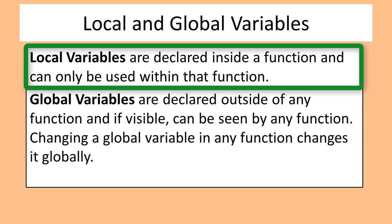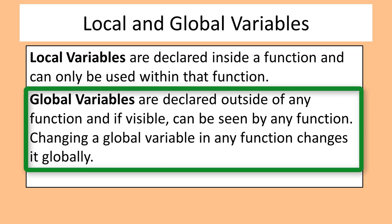The memory locations for local variables are not initialized to any specific value, but contain whatever was left in them the last time those locations were used by some other part of the program. Global variables are declared outside of any function and, if visible, can be seen by any function. Changing a global variable in any function changes it globally. Global variables are initialized to zero when declared.